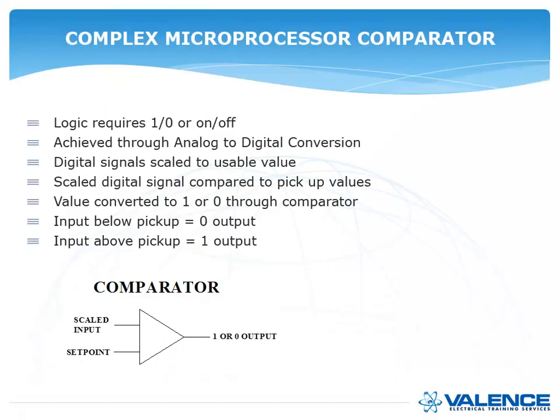When you're looking at the logic, the first thing that digital relays do is they're always comparing. They're comparing their analog signals to a setting. A comparator is often described as a triangle with an input on the top and a set point on the bottom. So if the line on the top is greater than whatever the line on the bottom is, then it's going to give you a 1 or a 0 output — so on or off.